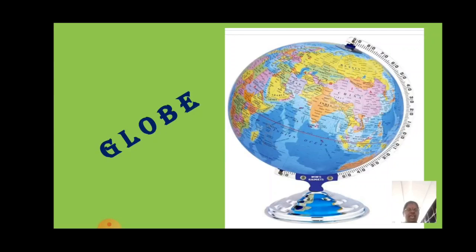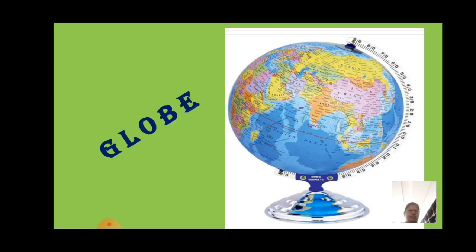Why is it called three-dimensional? Usually, wherever we are, we can see three directions — to our left, to our right, and to our front, but not at the back. So this is named three dimensions. The globe will help us in better understanding how our Earth looks.